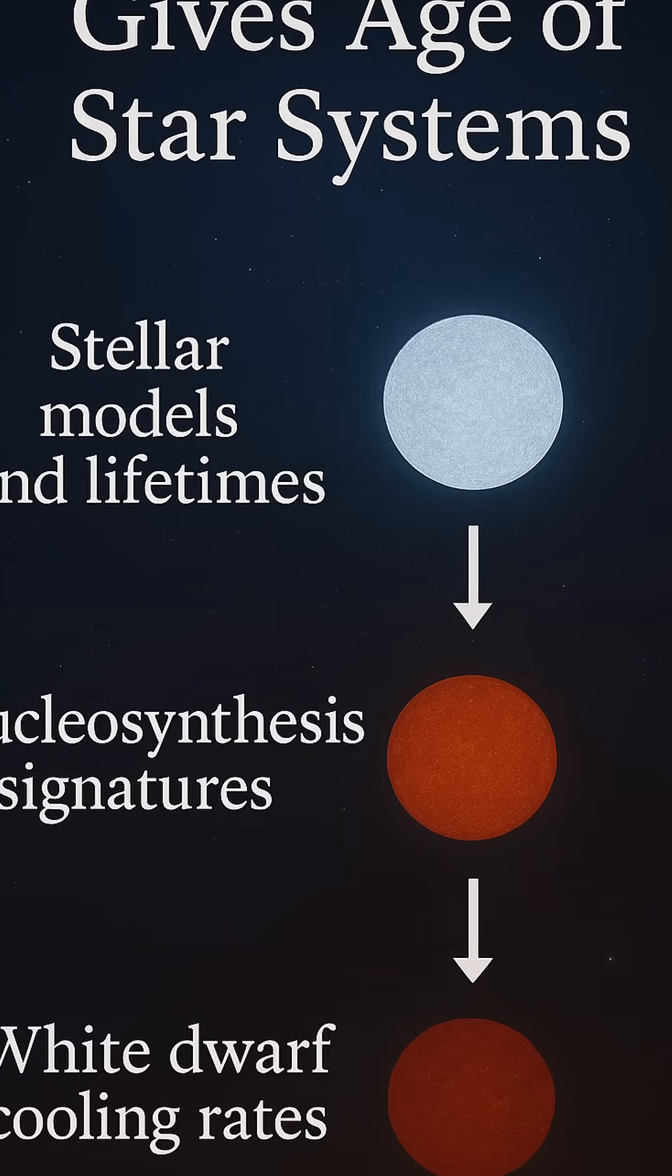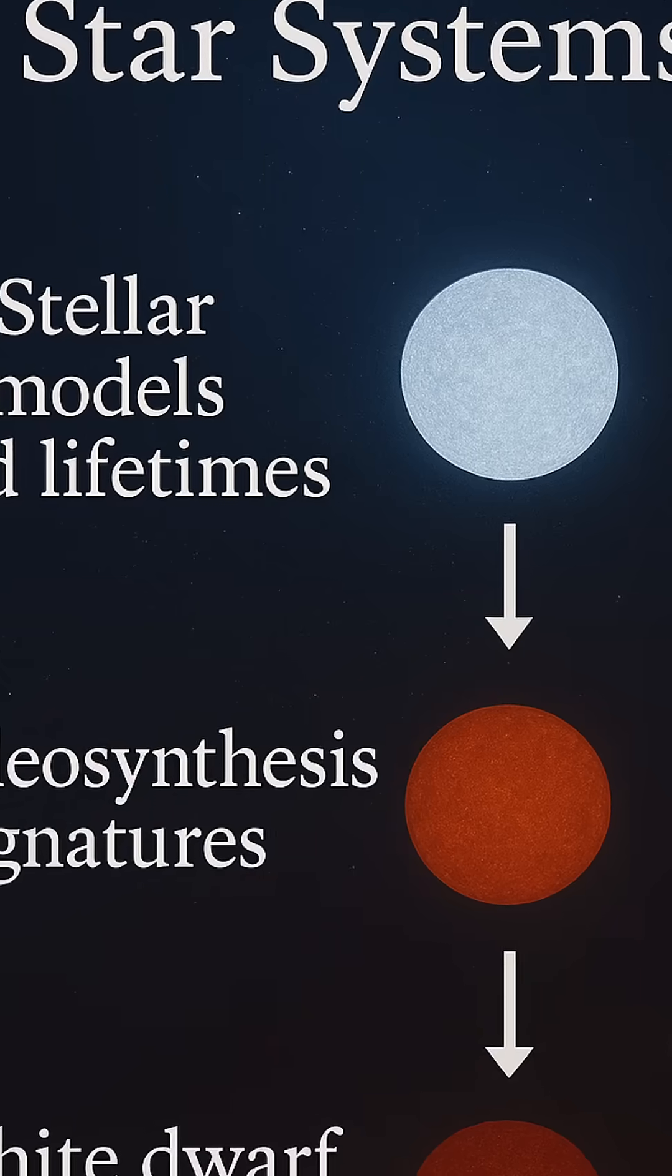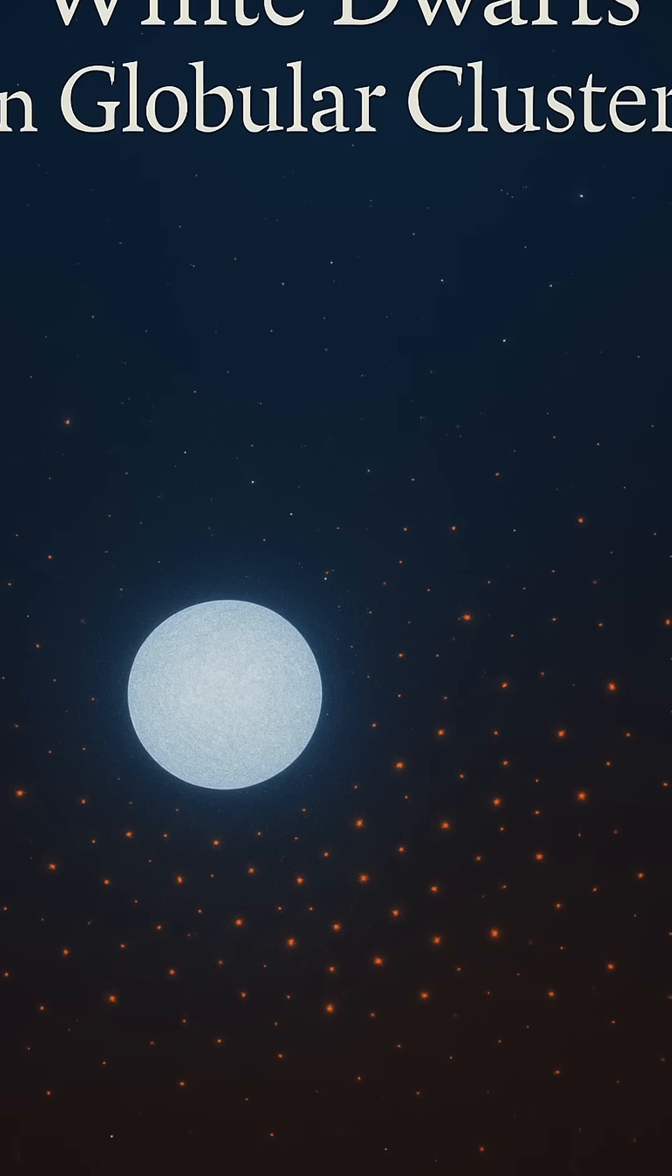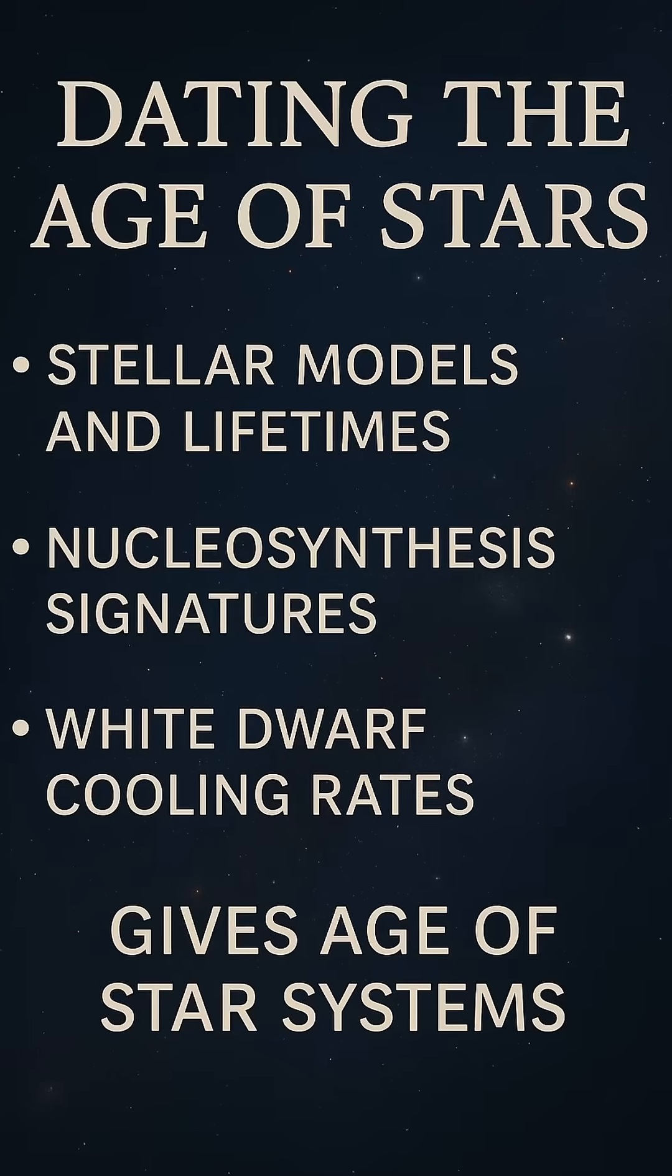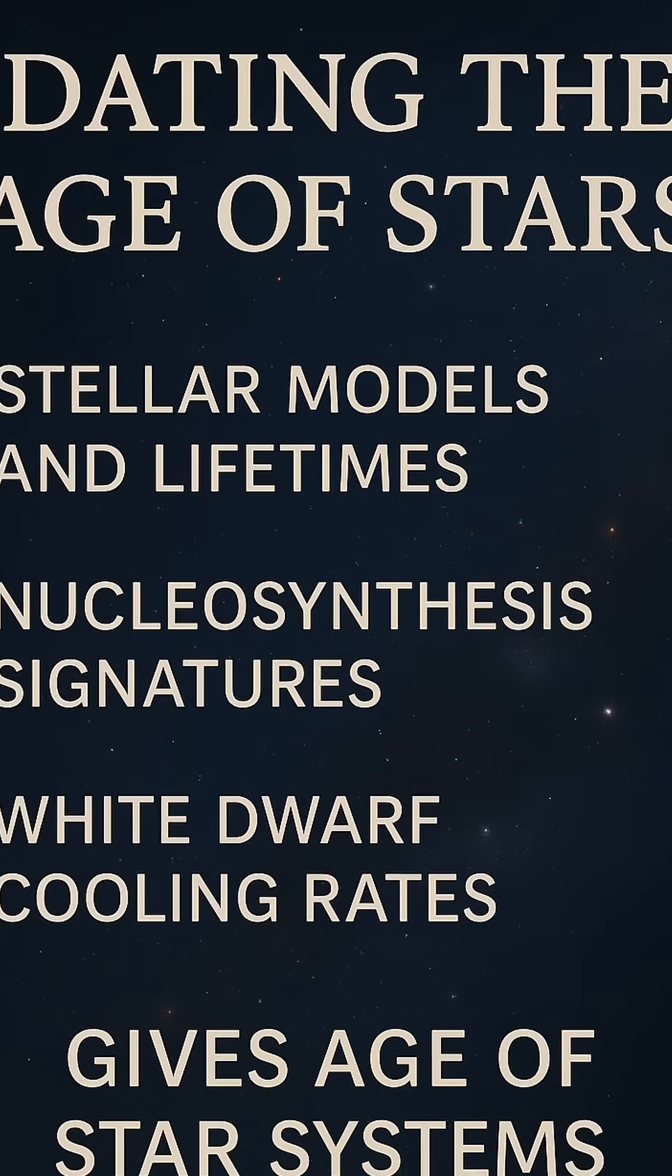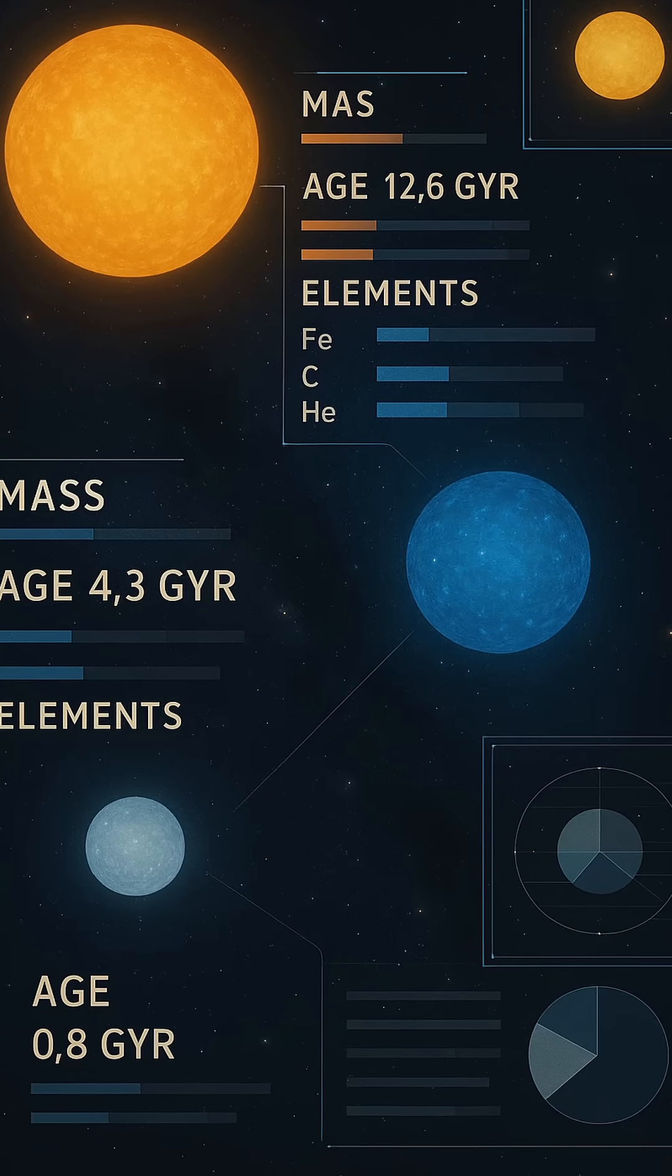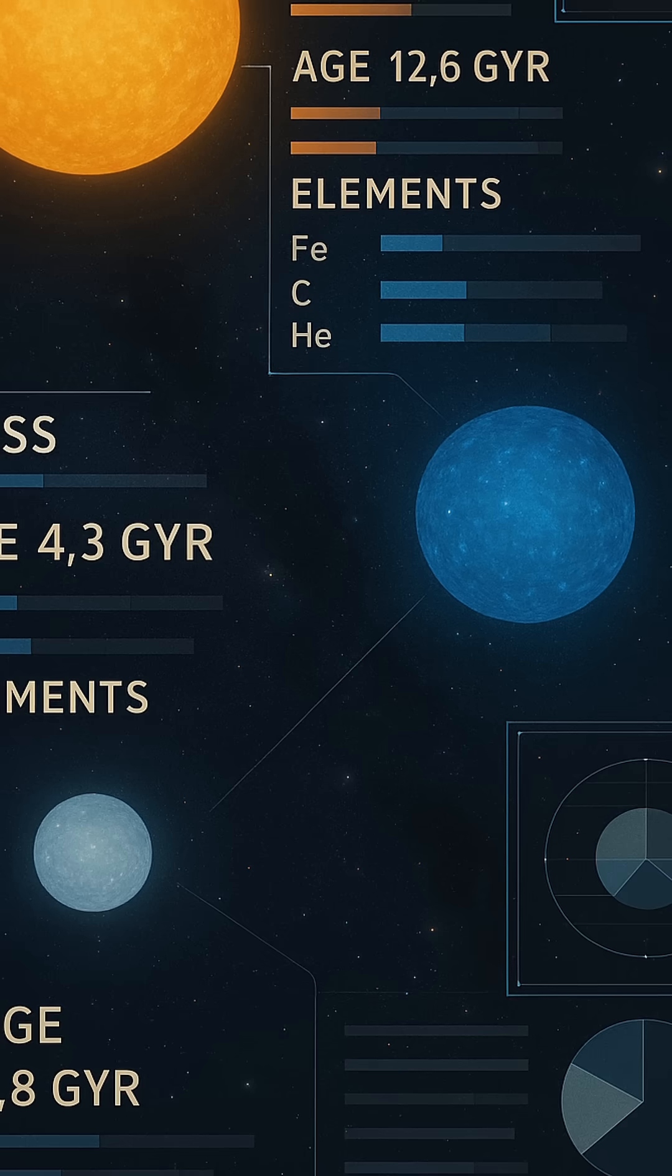Another clue lies in nucleosynthesis, the process by which stars fuse lighter elements into heavier ones. The specific abundance of elements like helium, carbon, and iron in a star's atmosphere acts like a chemical clock. Older stars born in the early universe tend to have fewer heavy elements because the universe hadn't yet produced many through supernova explosions. By examining a star's spectrum and analyzing these elemental fingerprints, scientists can deduce how many generations of stellar life preceded it, helping place the star within cosmic time.